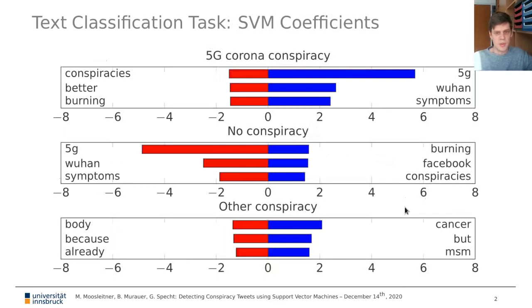On this slide we can see the coefficients of the support vector machine, in this case for the word unigrams, that quite nicely give an impression of the importance of the single terms within the tweets.